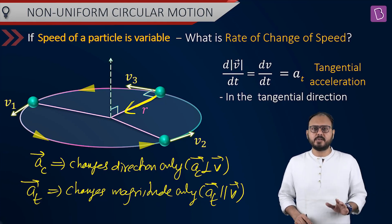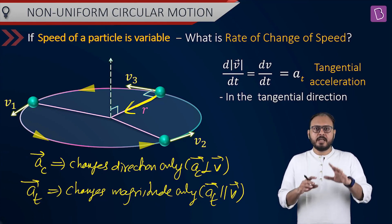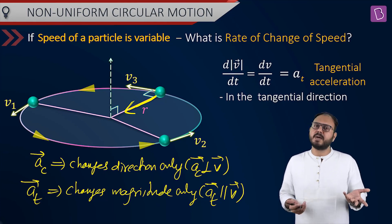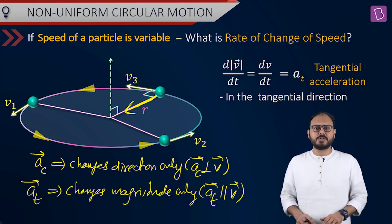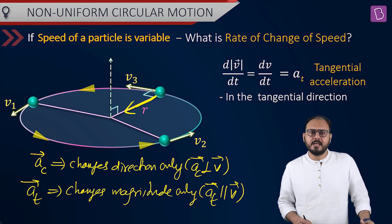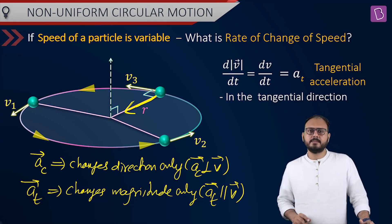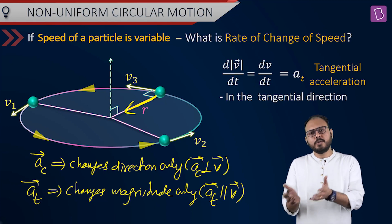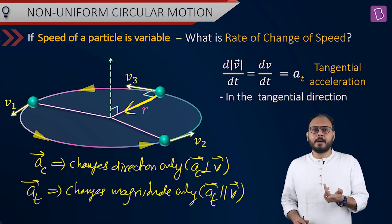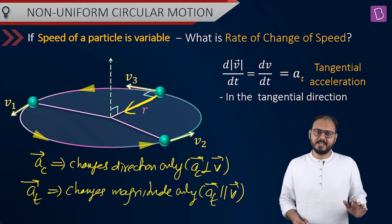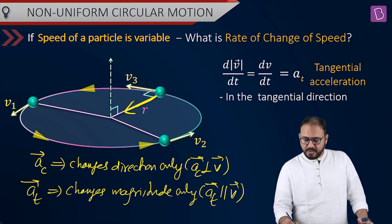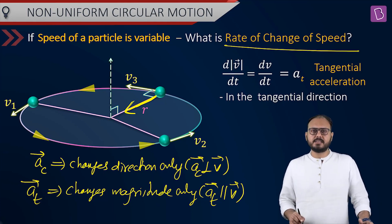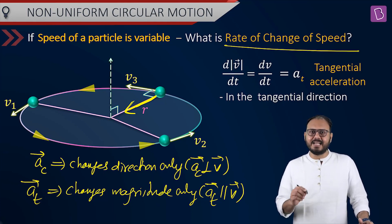What is ac? Centripetal acceleration. What is at? Tangential acceleration. In UCM, is ac there? Yes. Is at there? No, because magnitude is not changing. In non-uniform circular motion, both are there. Centripetal acceleration is always present whether it's UCM or NUCM. Tangential acceleration only appears in non-uniform circular motion. The definition of tangential acceleration is the rate of change of speed — d|v|/dt = at.